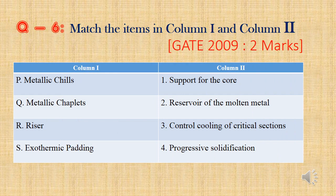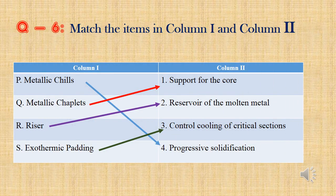Question 6: Match the items in column 1 and column 2. In the first column they have given terms and in the second column they have given their purposes. Metallic chills support the solidification. Metallic chaplets give support for the core. Riser is a molten metal reservoir which feeds molten metal into the mold when it gets solidified. Exothermic padding protects the sharp edges and also supports solidification at the sharp edges. You can see the answers in the slide now.